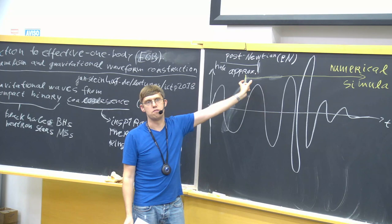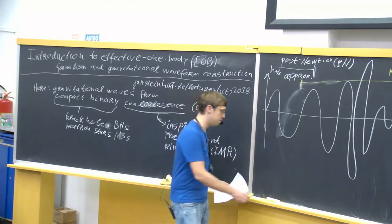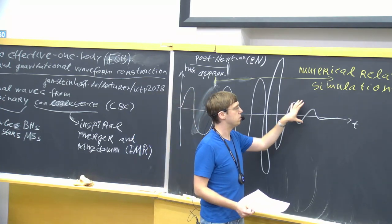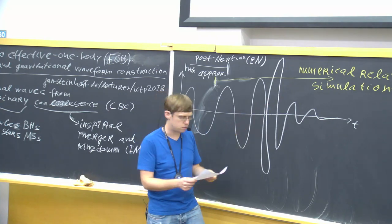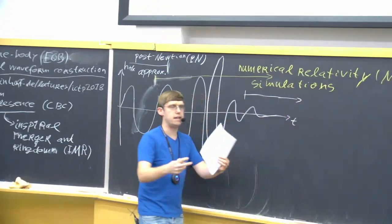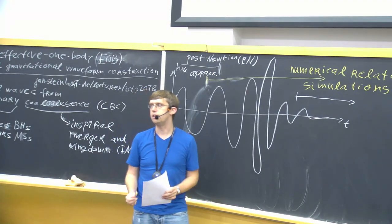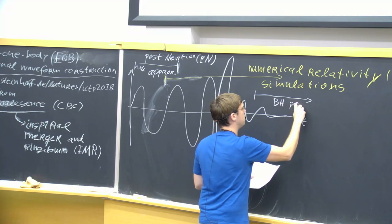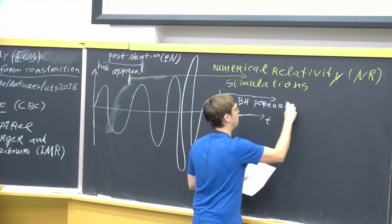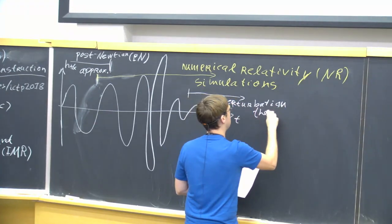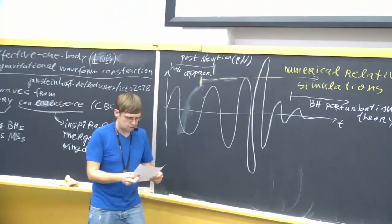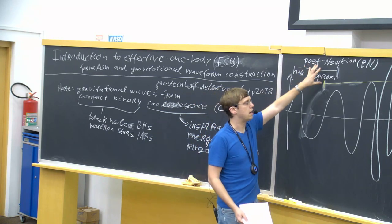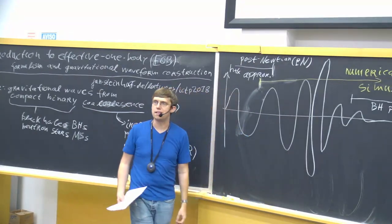You would hope that there's some kind of overlap, so that you could stitch the two waveforms together. And for the very last part, you also have a different method. When you have a final merged black hole which is slightly perturbed, you can again use perturbation methods. You could start with a black hole and perturb it — so this could be treated by black hole perturbation theory. So overall, you need to apply different methods for different parts of the waveform and then somehow combine them to a single waveform model.